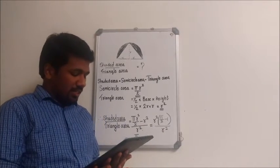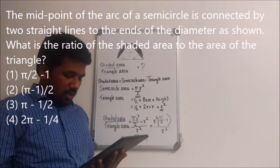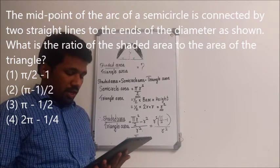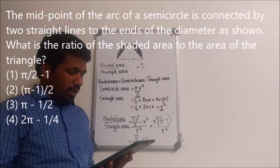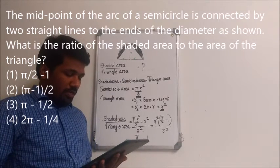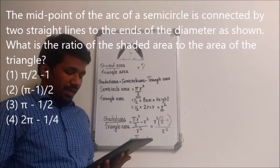The question reads like this: The midpoint of the arc of a semicircle is connected by two straight lines to the ends of the diameter as shown in the figure. What is the ratio of the shaded area to the area of the triangle?